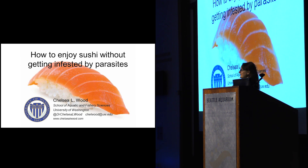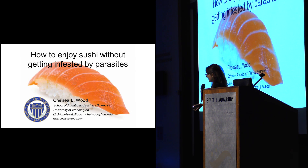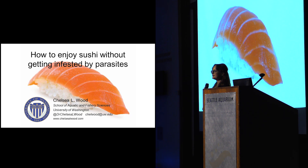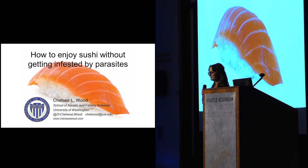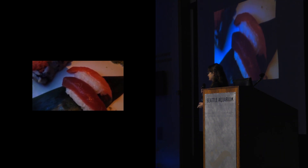The average resident of Washington State eats fish about once per month, and often those fish meals look like this. Rates of sushi consumption have skyrocketed in the past couple of years, and with those rising rates of consumption, we've been seeing increased incidence of this problem. There are worms in your sushi.